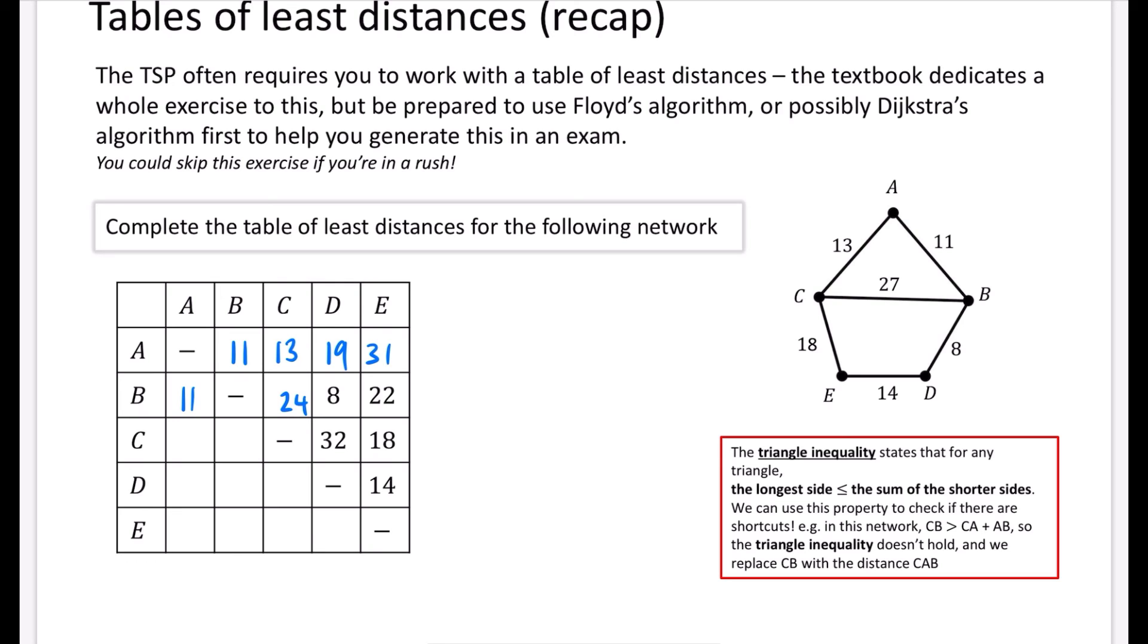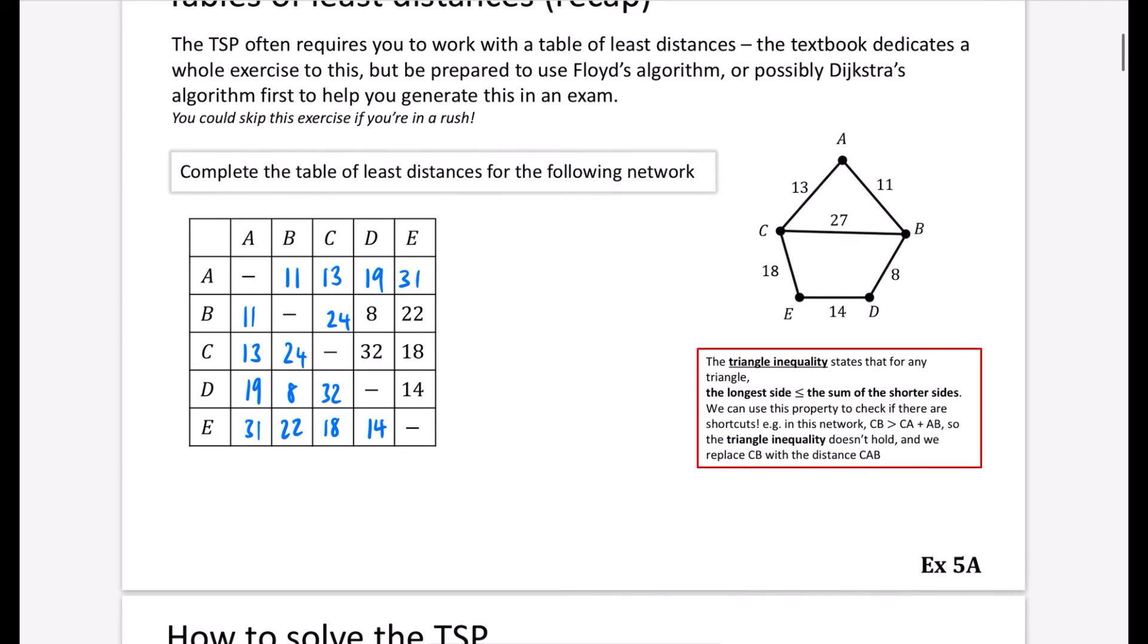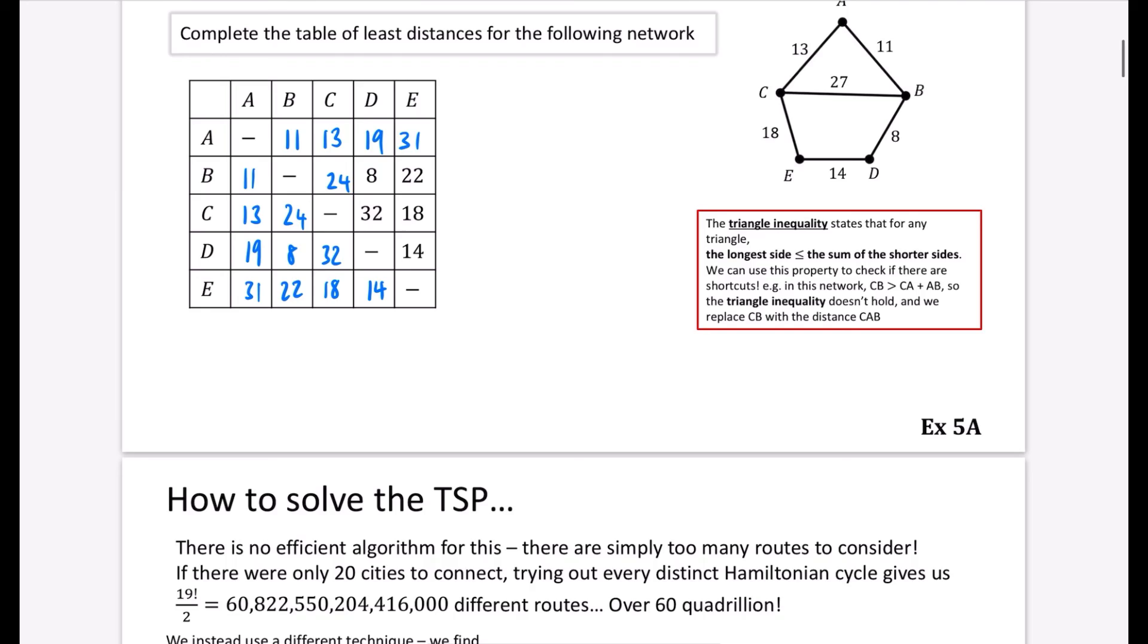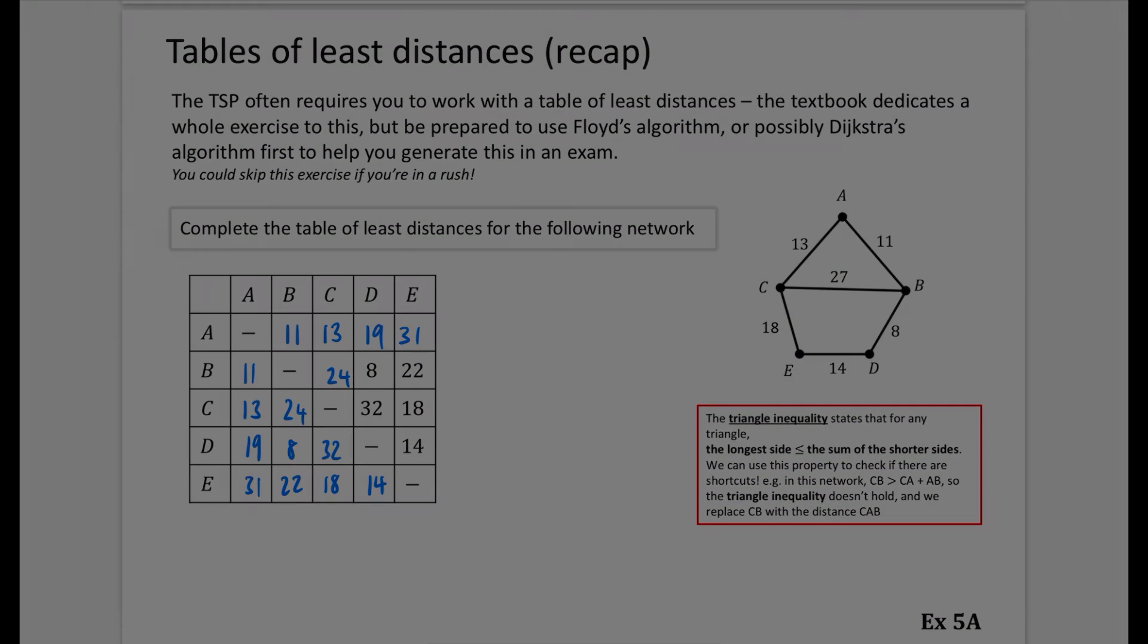The last thing is just to draw this all out into the table. So it's going to be 11, 13, 19, 31 coming downwards. 24, 8 and 22. 32, 18 and then 14 like this. And there's nothing really else that needs to be done on this. So you can now go and have a go. If you want to just get yourself back into the flow with some of this stuff, you can go to exercise 5A to do some tables of least distances. And then in the next video, we're actually going to talk about how do you solve the traveling salesman problem because that actually isn't a solution to it.